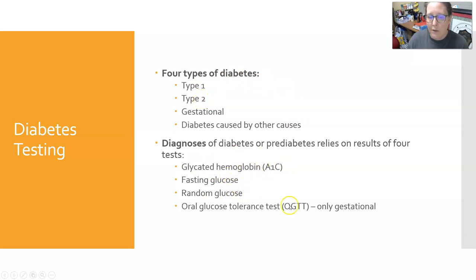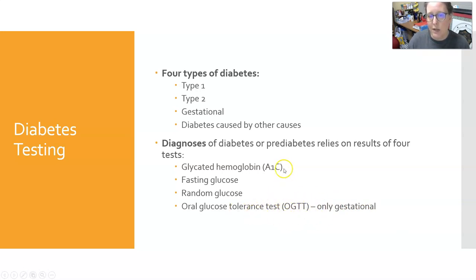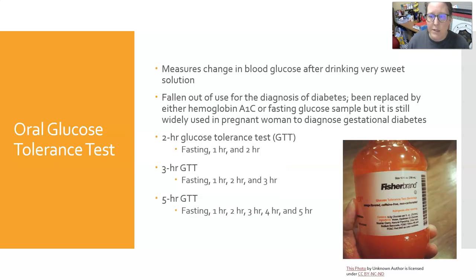The older oral glucose tolerance test is still being used in maternity clinics for the diagnosis of gestational diabetes. It used to be used to diagnose type 2 or possibly type 1 diabetes, but it has fallen out of favor because it takes a long time. The A1c, fasting glucose, and random glucose are way faster and easier, so the OGTT has generally been replaced for those purposes.